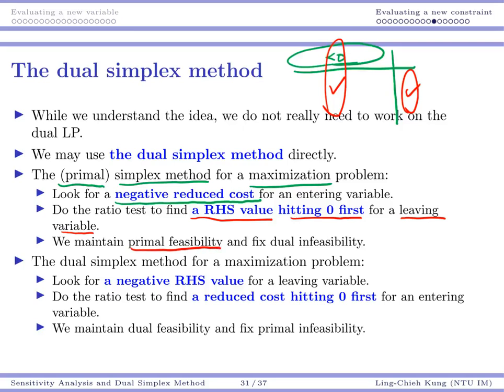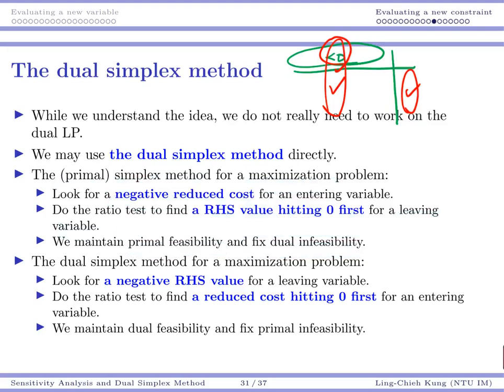The primal simplex method maintains primal feasibility and fixes dual infeasibility. Recalling complementary slackness: when a primal solution is not optimal, the corresponding dual solution is infeasible. A negative reduced cost tells you that the dual solution is currently infeasible at that moment. So we are maintaining primal feasibility while fixing dual constraints — some dual variables may be negative or dual constraints unsatisfied — and we keep iterating to fix that.